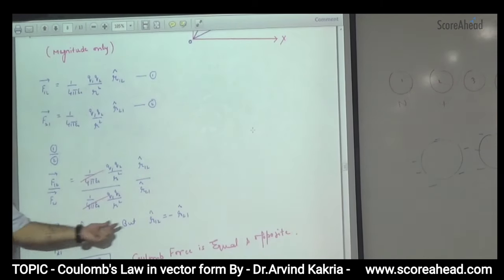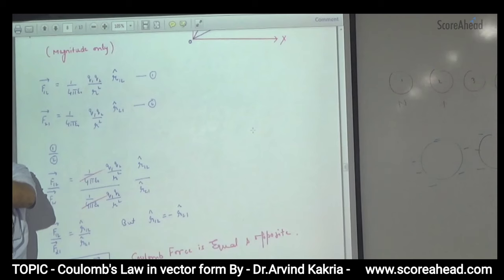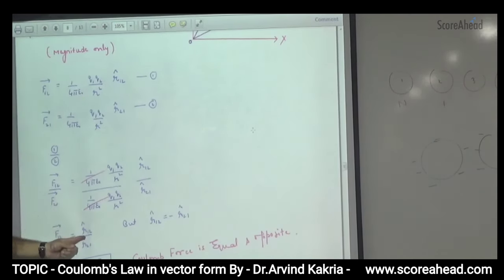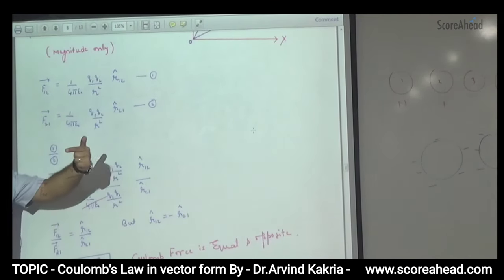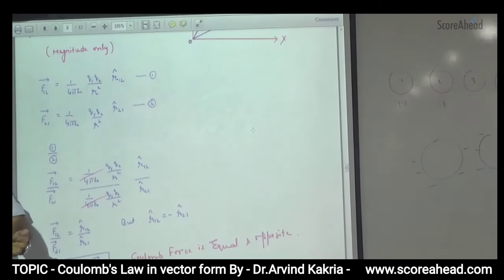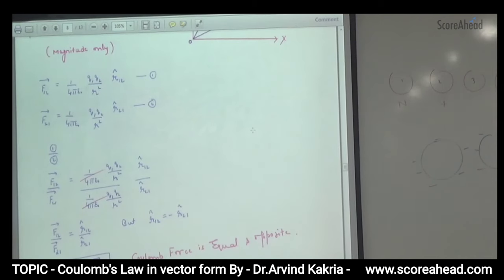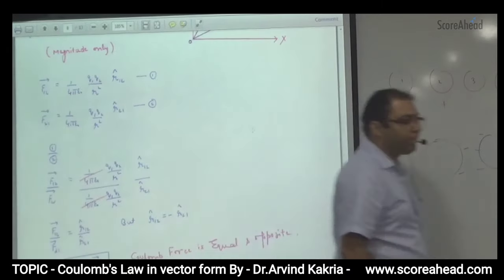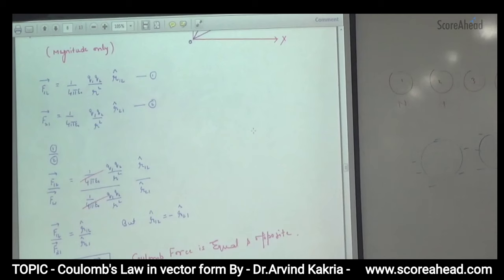The magnitudes of R12 and R21 are equal. The minus sign shows that both directions are opposite. So we can write: F12 vector equals minus F21 vector. This minus sign shows that Coulomb's force between two charges is always equal and opposite — proving Newton's third law. This is the derivation to show that Coulomb's force is equal and opposite.